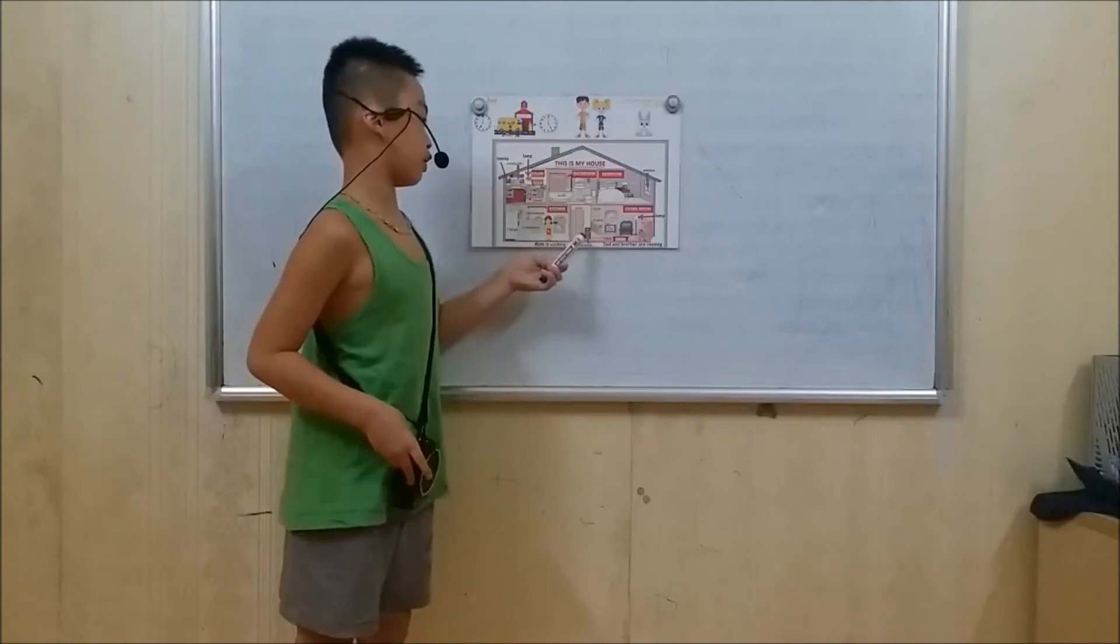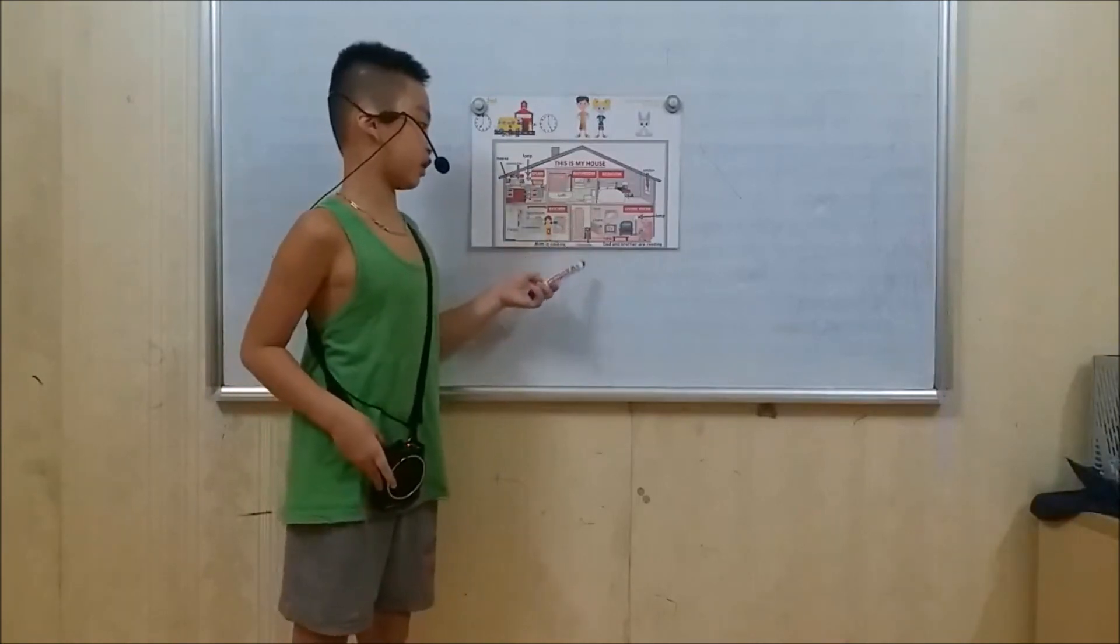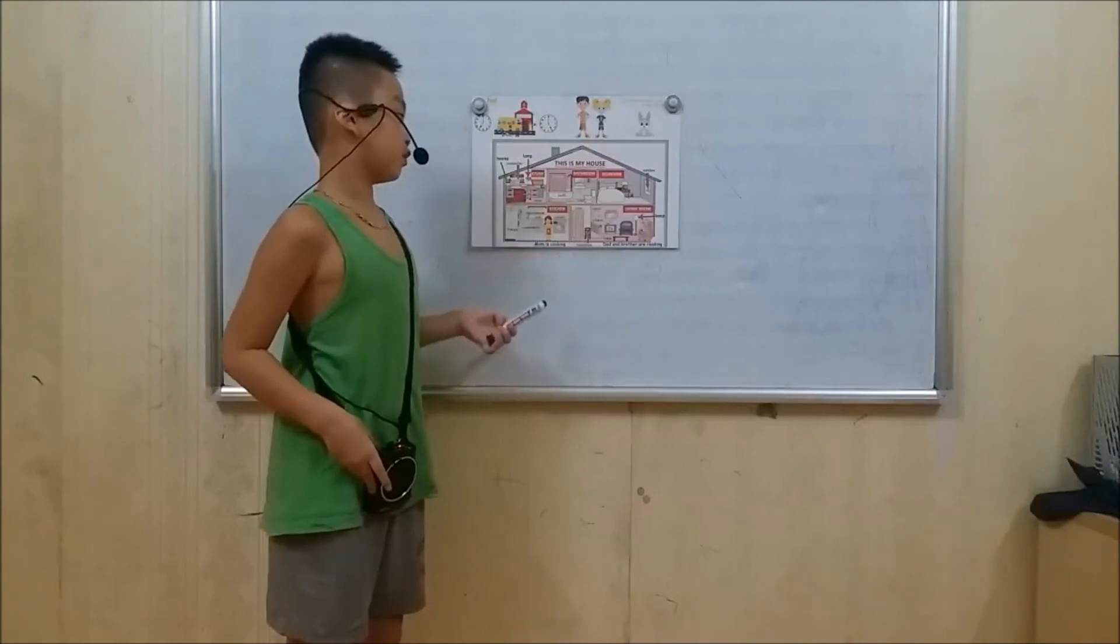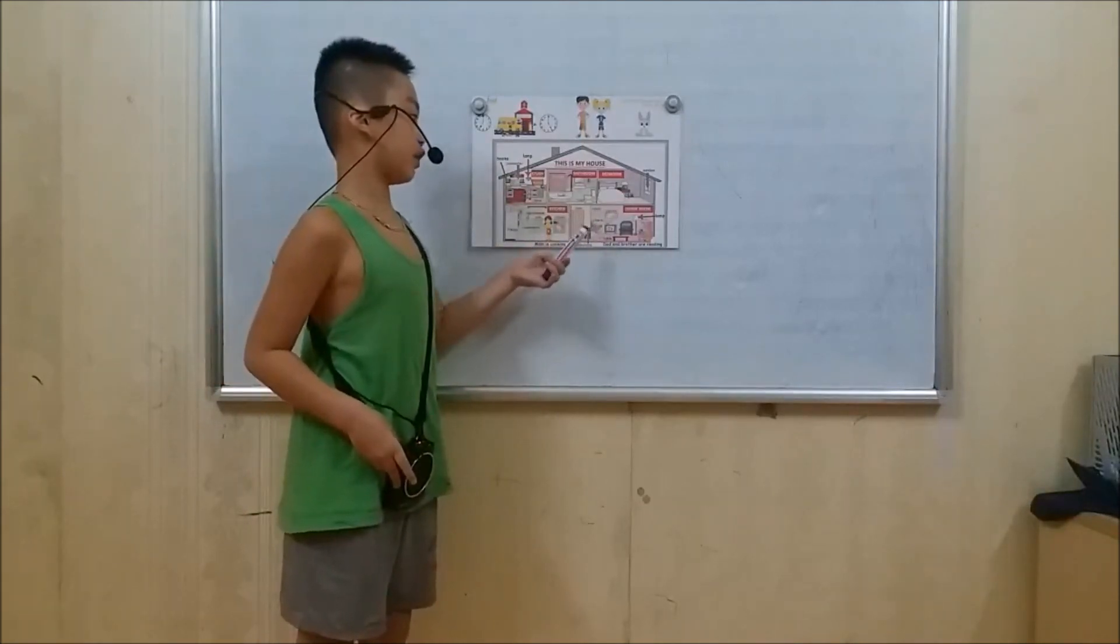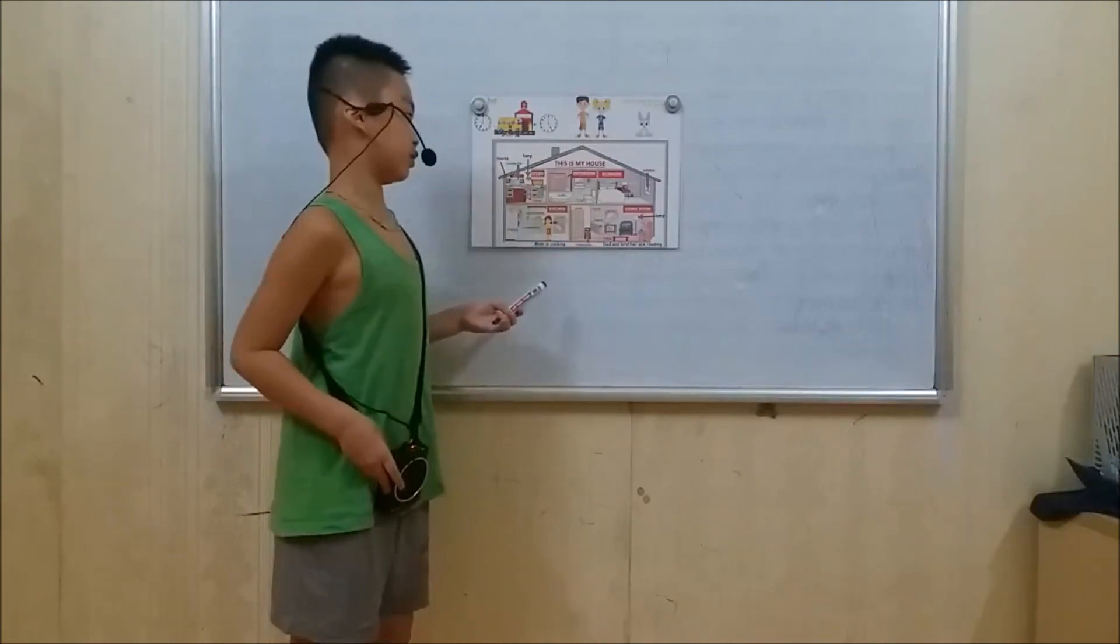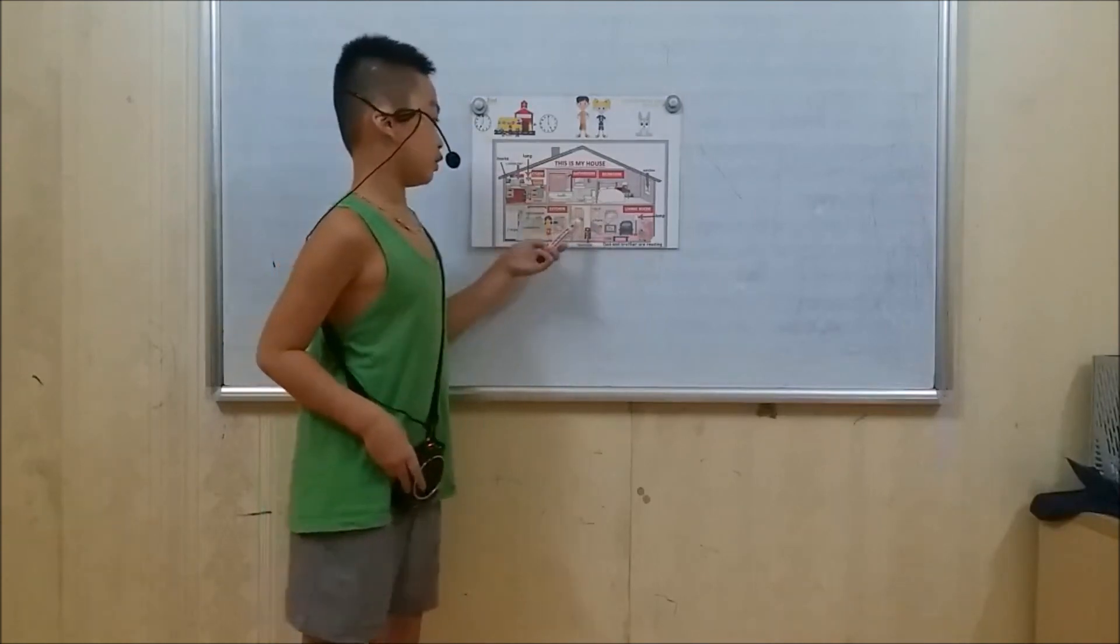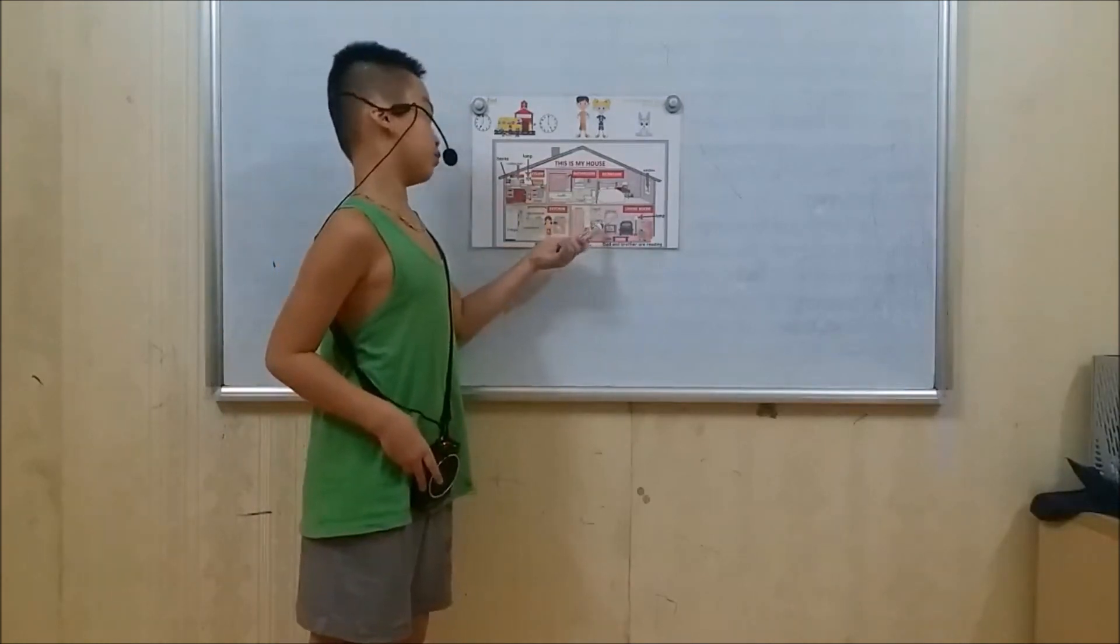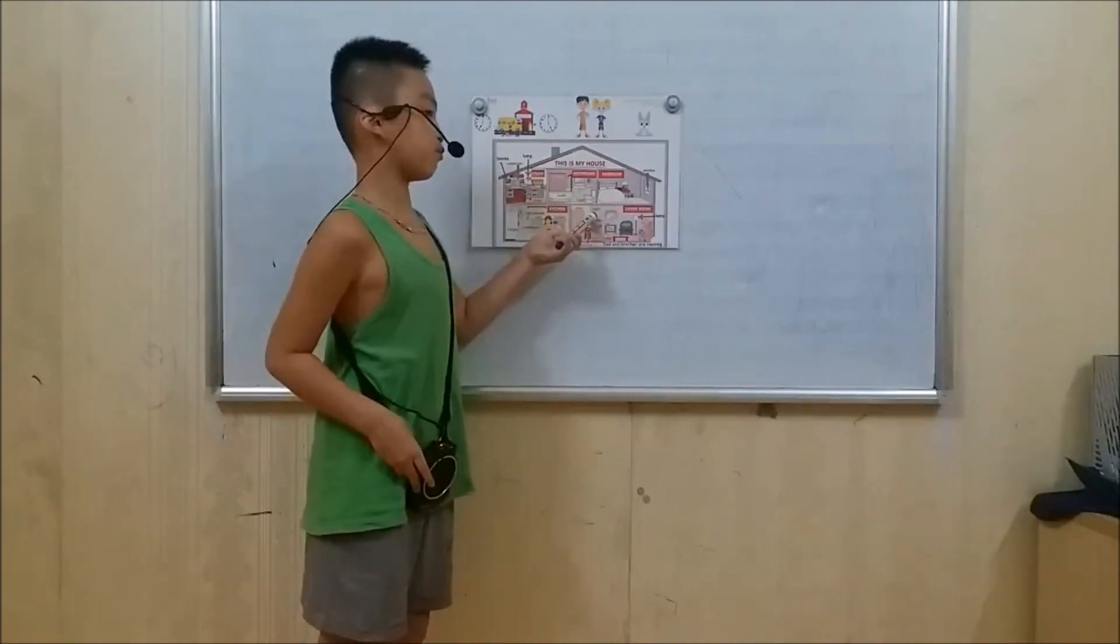Next to the bedroom is a living room. Next to the table is a chair between the TV and the toilet. In front of the room is the table. On the wall is the photo and the clock.